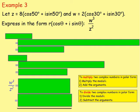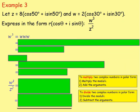Example 3: let Z be 8(cos 50° + I sine 50°) and W be 2(cos 30° + I sine 30°). This time, express in the form R(cos theta + I sine theta): W cubed over Z squared. Because we're dividing W cubed by Z squared, we want to first work out W cubed. W cubed is W times W times W.